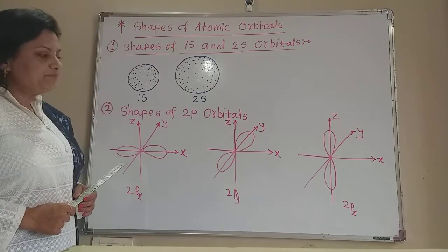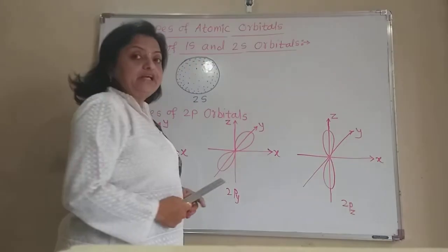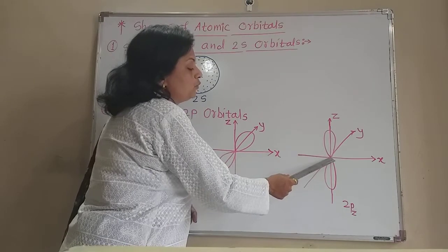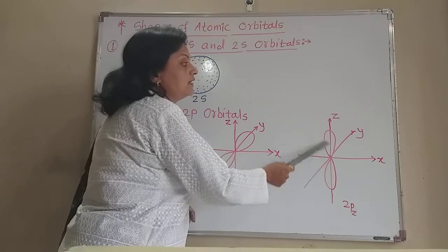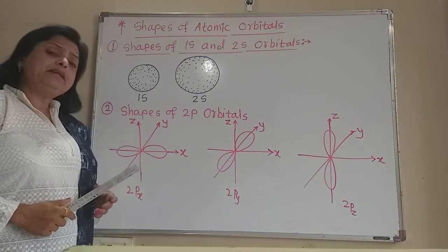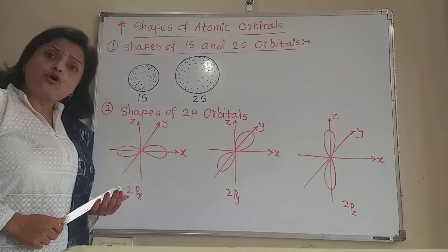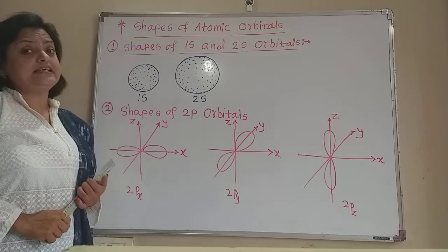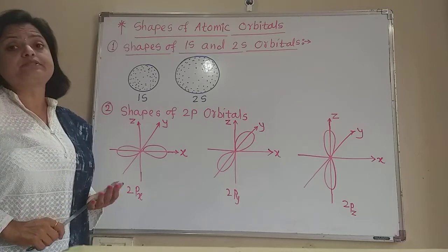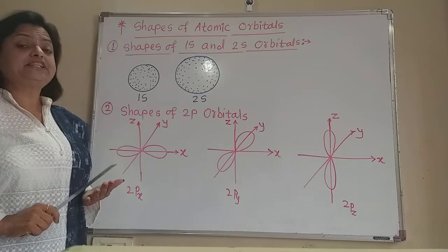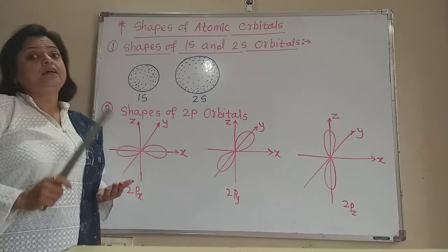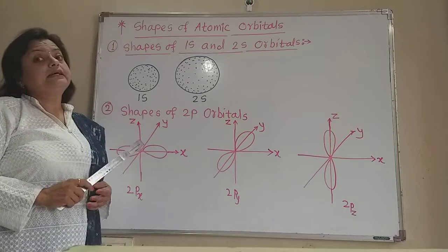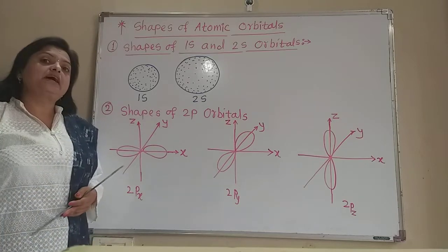Similarly, this is the 2pz orbital because the dumbbell-shaped orbital is on the z-axis. The 3p orbitals have the same shape but they are larger in size. 3p orbitals are also of three types: 3px, 3py, and 3pz, and they are around their respective x, y, and z axes.